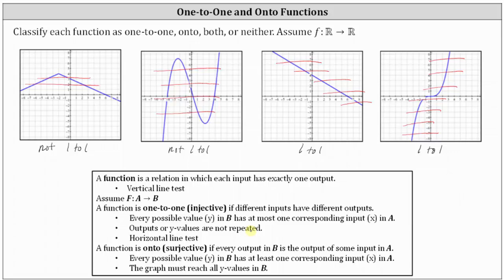Wherever the horizontal line intersects the graph in more than one point — for example, on the graph on the left, horizontal lines intersect the graph in two points, meaning there are two x values that give the same y value. On the second graph, there are y values where three inputs or x values give the same output or y value, which is why these two graphs are not one-to-one. For the two graphs on the right, for every possible y value there will be exactly one corresponding input or x value, which is why they are one-to-one functions.